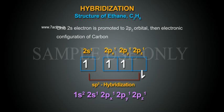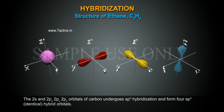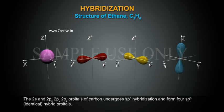One 2s electron is promoted to 2pz orbital, then electronic configuration of carbon 1s2, 2s1, 2px1, 2py1, 2pz1.